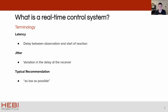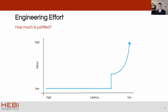The primary factors when talking about real-time control are latency and jitter. Latency is the delay between observation and the start of a reaction, and jitter is the variation in the delay of the receiver. The general recommendation is usually that it should be as low as possible, but there's rarely any information about what's actually required. This is unfortunate because the effort versus latency curve has a pretty big cliff — there is a reasonable level of latency achievable with minimal effort, but at some point it requires specialized systems and the effort grows exponentially. I would say the cliff is located around one millisecond. There are many parts of robotics that cross into the right side of the cliff, but it can save a lot of effort to examine the requirements and stay on the left side as much as possible.